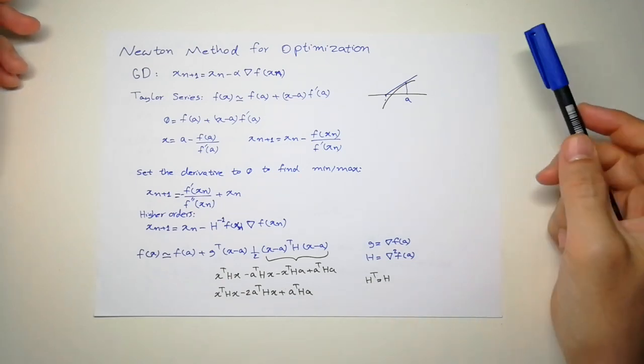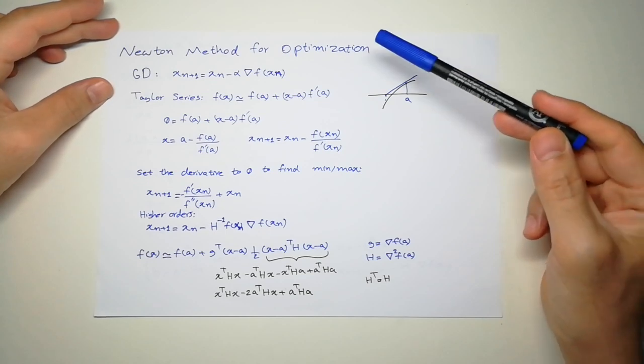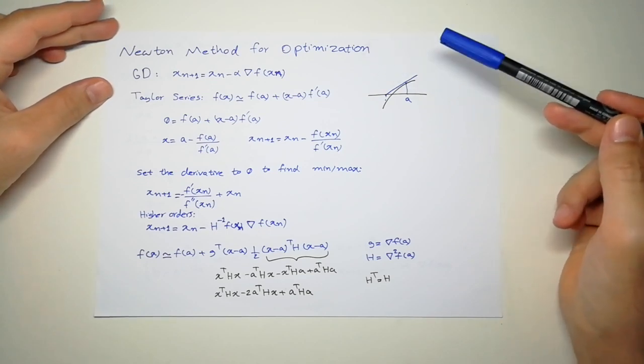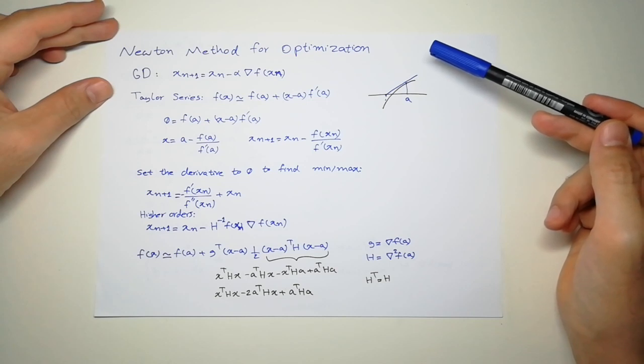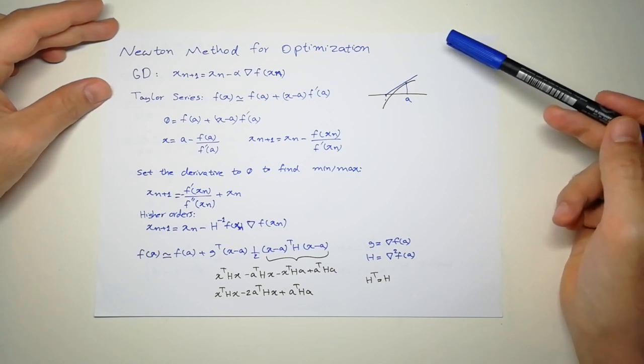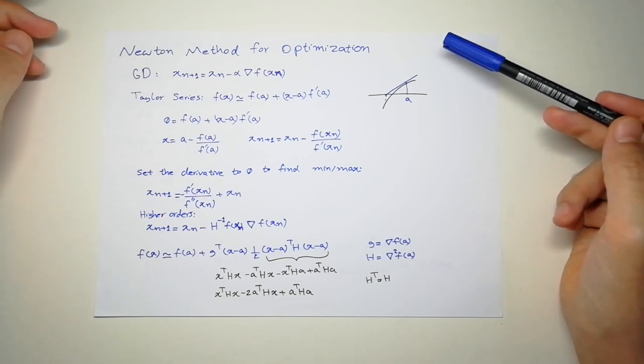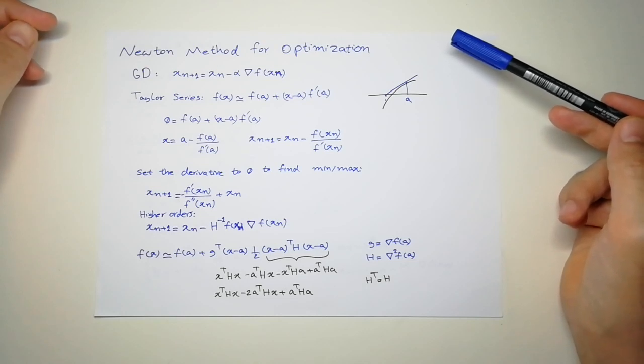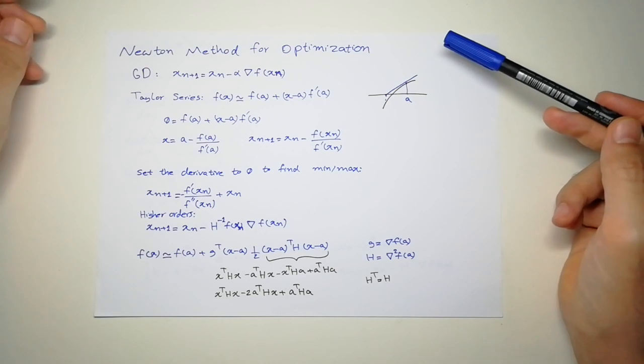Hi, in this video I'm going to talk about Newton method for optimization. Newton method has two applications: one for finding zero of a function or roots, and the other one is for finding the minimum or maximum of a function. So you can imagine if you find the roots for a function derivative, then you find the min or max of a function.